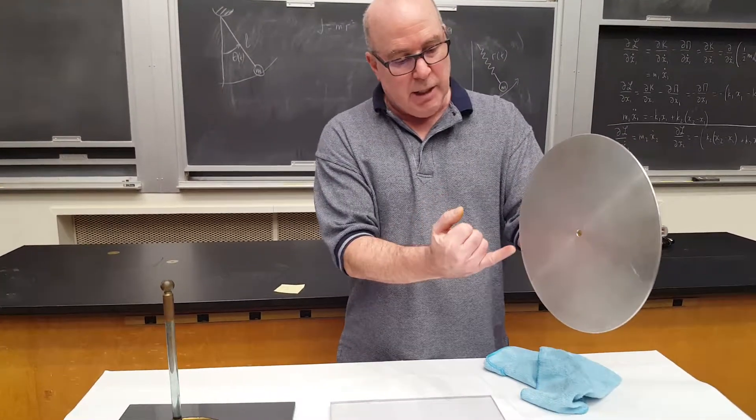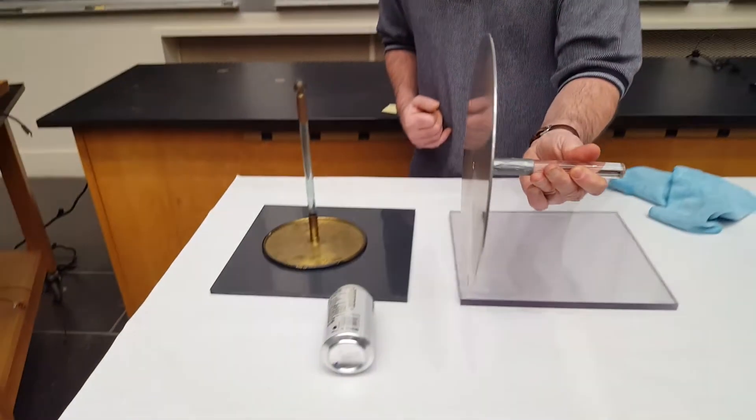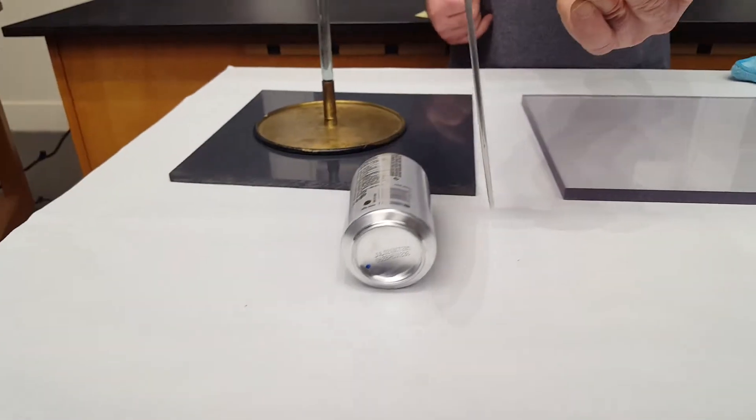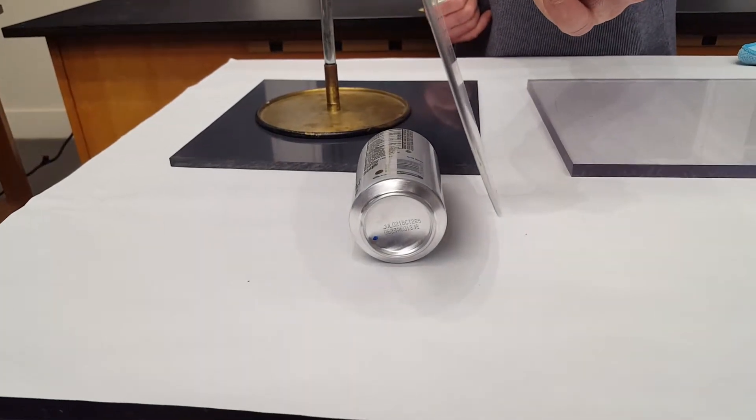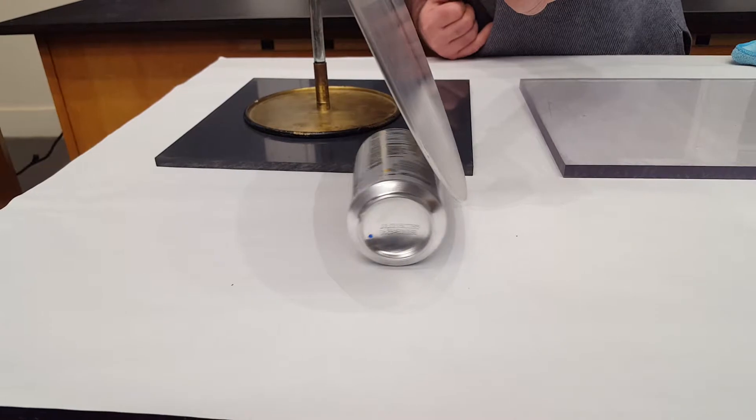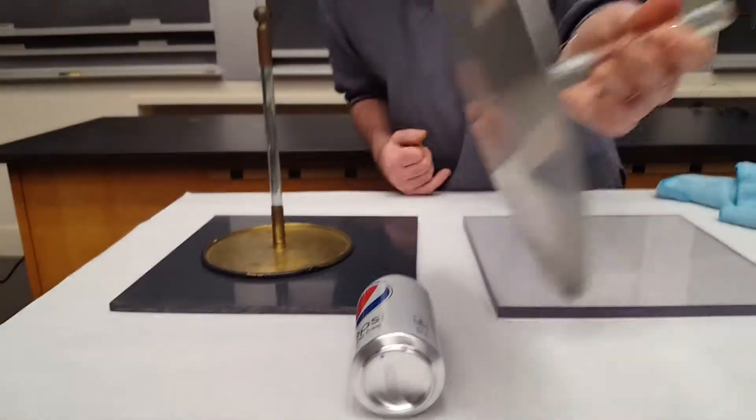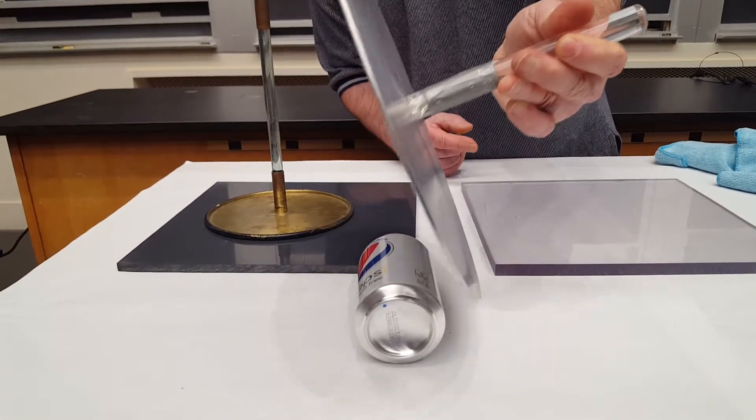I'm going to take the negative charge here and I'm going to show attraction. The coke can is attracted to the negative charge.